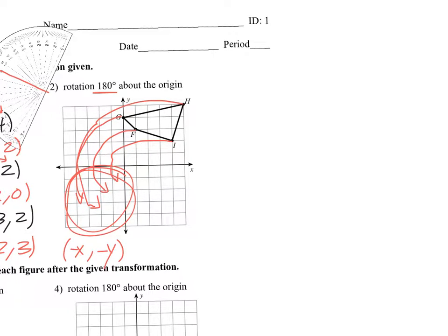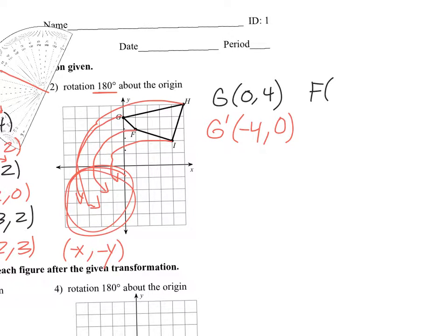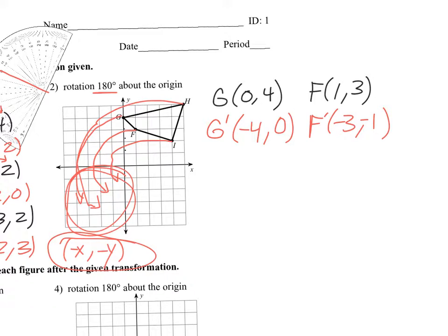So now we're going to do the exact same thing we did earlier. Where's the point G? The point G is at 0, 4. So where would G prime be? You switch the X and Y, but this time the X and Y both have to be negative. You can't make a 0 negative, so in that case that's all that happens. Where's F? F was at 1, 3. So where's F prime? You switch the X and Y, and then make them both negative because in that quadrant, the X and Y are both negative, unless it's 0.